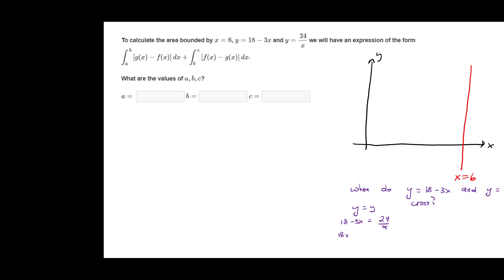18x minus 3x squared is equal to 24. Then move everything to the right hand side. So I'm going to subtract 18x from both sides and add 3x squared to both sides. We'll have 3x squared minus 18x plus 24 is equal to 0. Divide all the pieces by 3. So x squared minus 6x plus 8 is equal to 0. And then we have to factor.